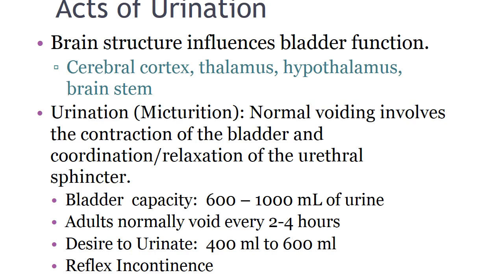Brain structures that influence bladder function include the cerebral cortex, thalamus, hypothalamus, and brainstem; these can inhibit the urge to void or allow voiding. Urination, also known as micturition, is connected to the micturition reflex — the relaxation of the urethral sphincter in response to increased pressure on the bladder. Bladder capacity varies but ranges from 600 to 1000 milliliters; the urgency to void usually occurs around 400–600 mL, and a normal adult voids every two to four hours. Understanding normal voiding helps assess which form of incontinence or bladder problem may be occurring.